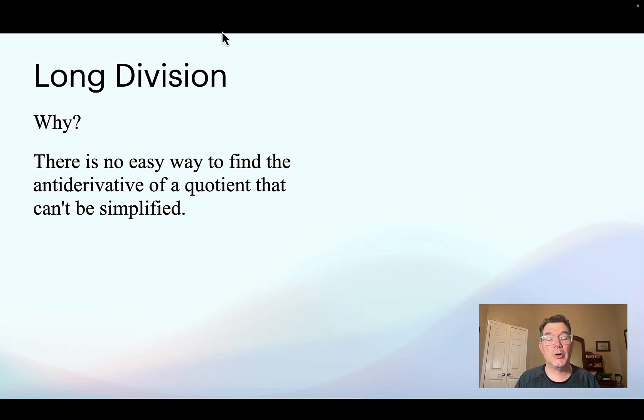So long division is a good approach when that happens. So something like 6x cubed minus 4x squared plus 7x plus 1 over x minus 2. You can't really find the antiderivative of that just by looking at it because x minus 2 can't be factored out of the top and the top isn't the derivative of x minus 2.